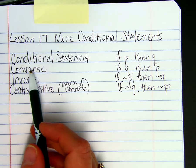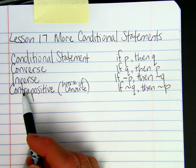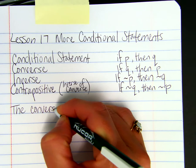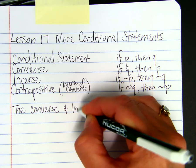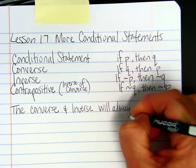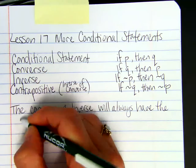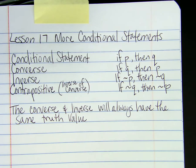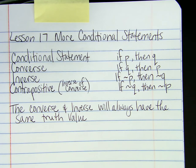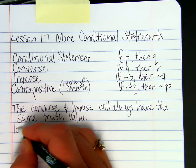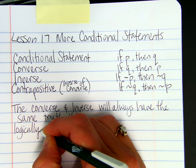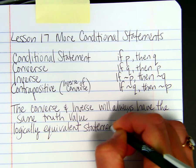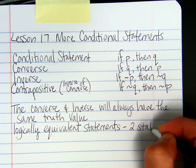The converse and the inverse will always have the same truth value — so if one is true, the other one will be true. By definition, logically equivalent statements are two statements with the same truth value.